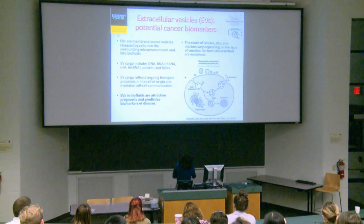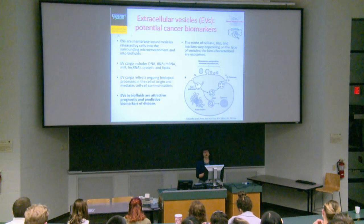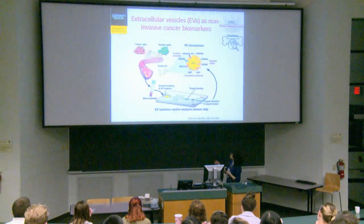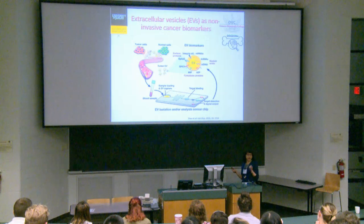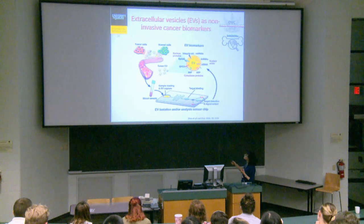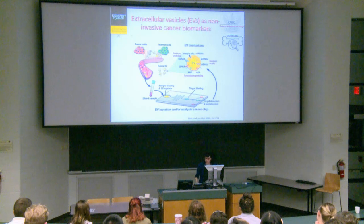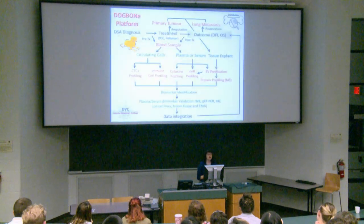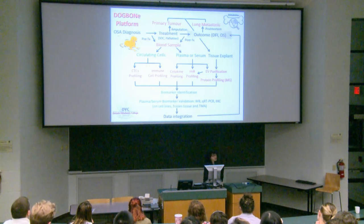Because extracellular vesicles reflect ongoing biological processes, they are considered potential biomarkers. A blood sample can be processed — plasma or serum isolated and applied to a chip — where vesicles are collected by binding to specific markers they express. By looking at different target proteins with prognostic or predictive value, we can quantify these vesicles and use them as biomarkers of cancer. This is the type of work we are trying to do.